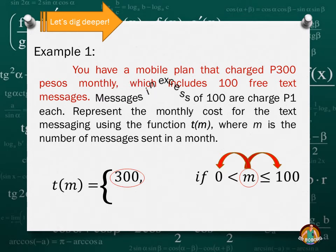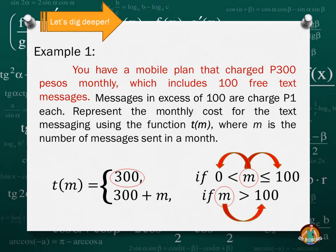But we have here our second condition where messages in excess of 100 are charged 1 peso each. It means your M here is greater than 100. It means you exceeded the free text messages because you text a lot, so you didn't notice that within a month you consumed the 100 and exceeded it. Therefore, what you will pay is 300 plus M. What is M here? The number of excess. So however many you exceeded 100, that will be the additional payment to 300. That is an example of a piecewise or compound function. So we have two conditions with respect to our domain. What is our domain? The number of messages sent in a month.